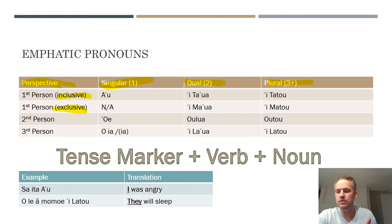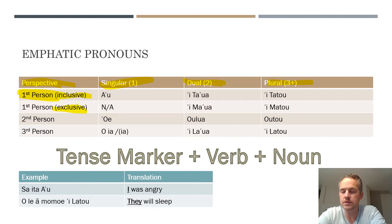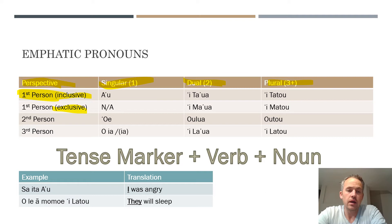I'll demonstrate the pronunciation of each pronoun and give examples of how to use them. Going across the first person inclusive row: for singular, the first person pronoun in Samoan is au — the equivalent of 'I' in English. For dual, it's itā. For plural, it's itātou.